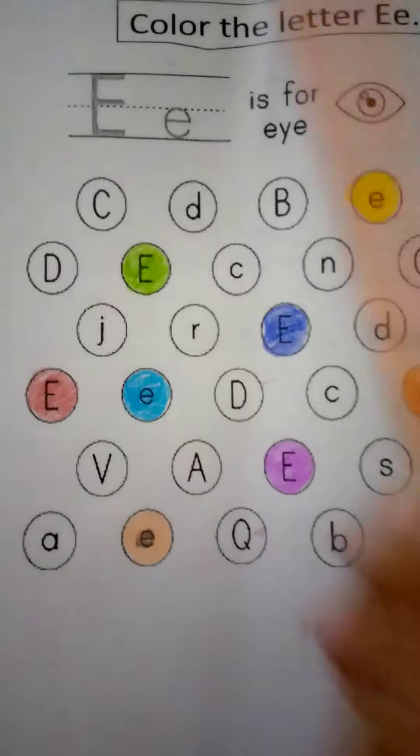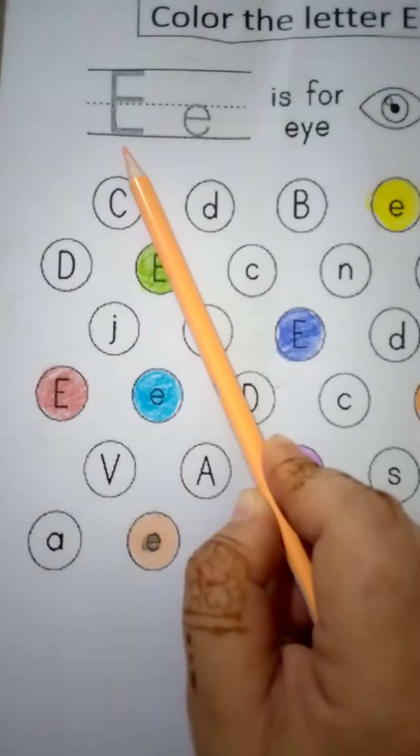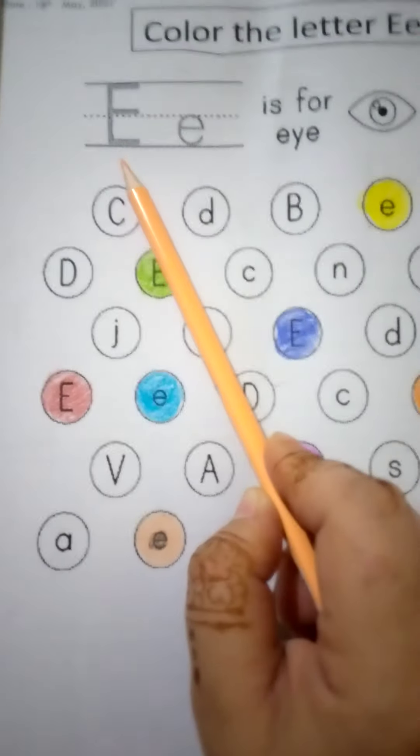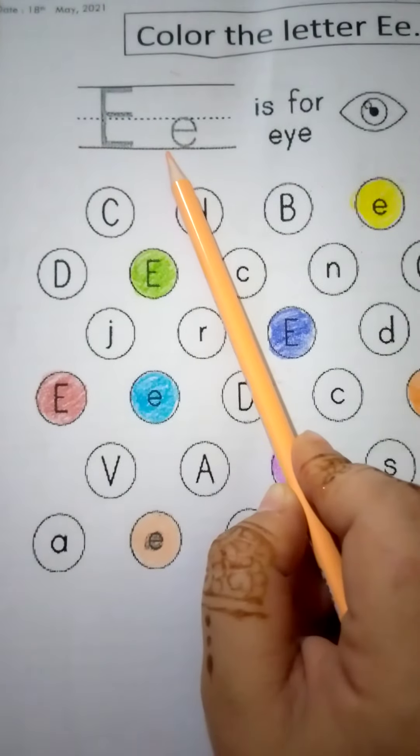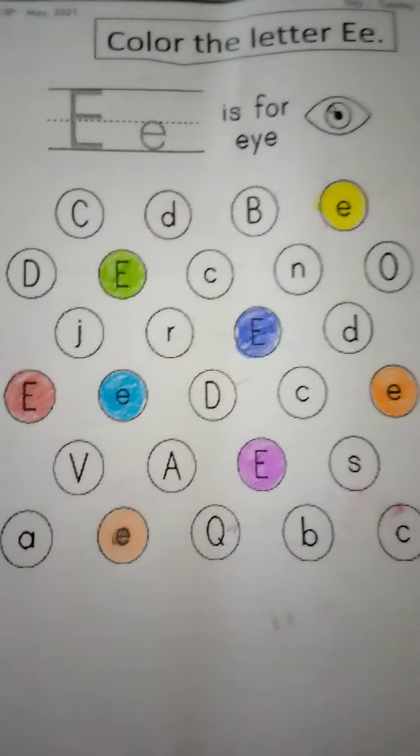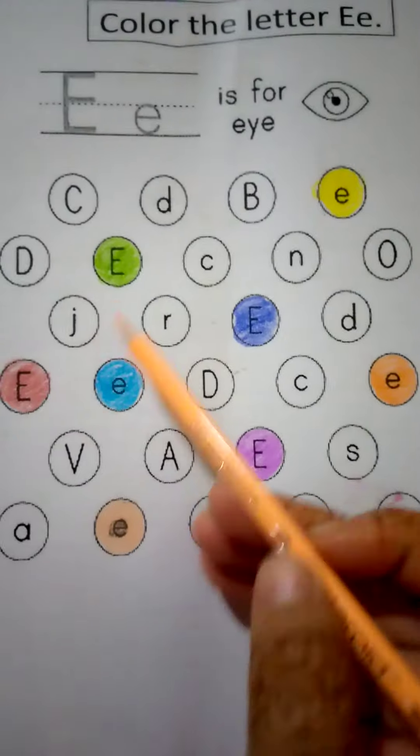Again, repeat the letter with me. E. The name of letter is E and the sound of letter is E. Circle. Color the letter E.